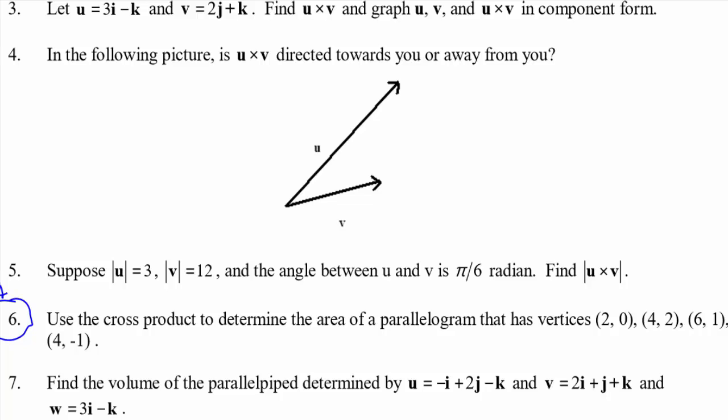And number four, is U cross V directed towards you or away from you? In other words, is U cross V coming out of the screen towards you, and you have to duck so it misses your head, or is it going into the screen?